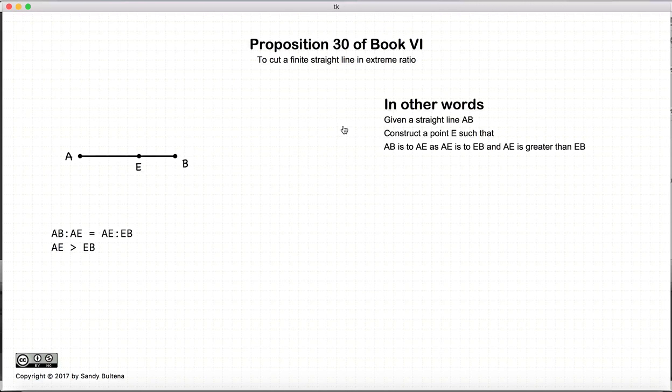Now in this proposition we're trying to cut a line into the extreme ratio, and what that means is we're cutting the line where AB to AE equals AE to EB.